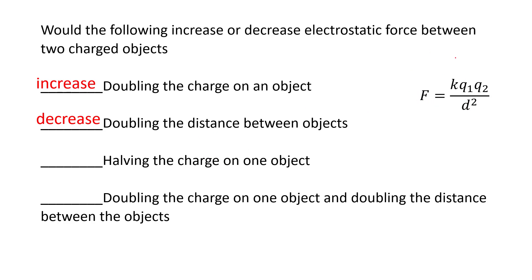If you halve the charge in one object — make it one half of what it was before — it would also decrease the force. And if you double the charge of an object but also double the distance, doubling the distance has a greater effect. Doubling a charge and doubling the distance won't make up for it, so it still would overall decrease. If you type in 1/2 squared, you'll see you get a number less than 1.